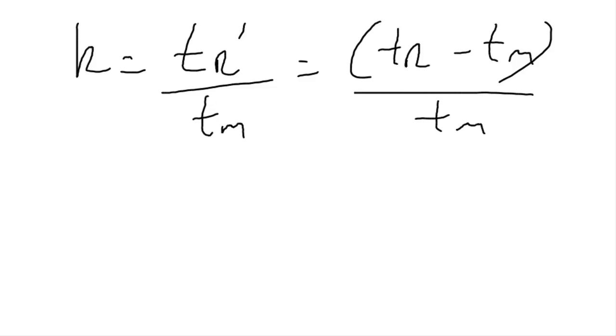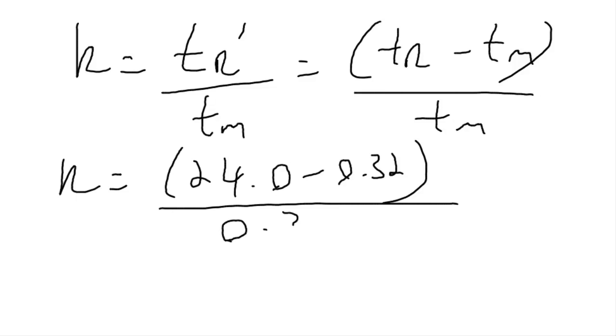So this is a pretty simple calculation. Again, everything needs to be in the same units, time units. So for the second peak, retention time was 24, void time was 0.32 minutes. And we divide by 0.32, we're going to get an answer of 74 with no units.